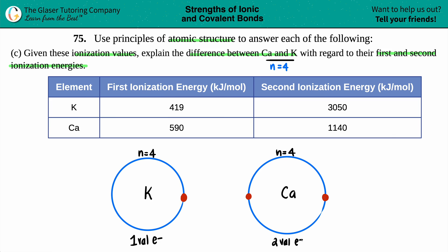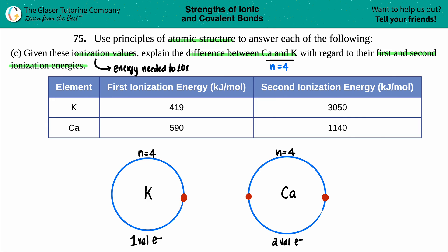Now we have to explain the differences in ionization energy between calcium and potassium. Ionization energy is the energy needed to become an ion - specifically the cation. It's the energy needed to lose an electron, so you always get a positive ionization energy value. Ionization energy does not talk about gaining electrons - that's electronegativity, that's electron affinity.